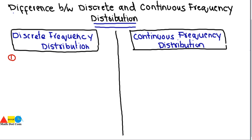In every frequency distribution you have a variable of which multiple values will be given in a certain question. Based on those variable values, you have to classify between discrete frequency distribution and continuous frequency distribution.